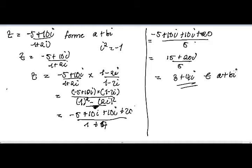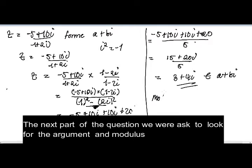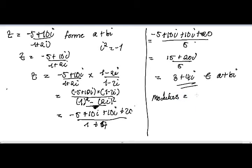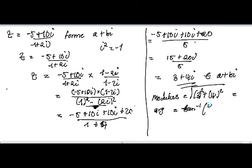Part b asks for the modulus and the argument. I won't go into detail but will state how to do it, because finding the modulus and argument is not too difficult — if somebody has a problem, just comment below and I will answer. For the modulus, you compute the square root of (3² + 4²). For the argument, it is arctan(4/3). You can compute both answers from there.